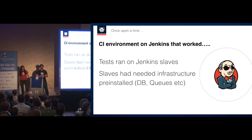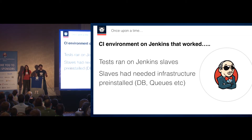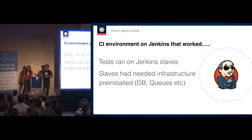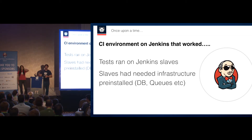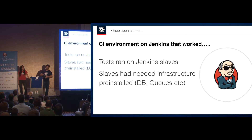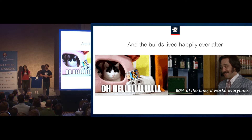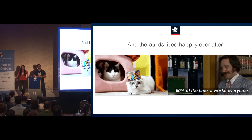Once upon a time, we had a CI environment based on Jenkins that kind of worked. We had tests running on Jenkins slaves. Each Jenkins slave was pre-installed with whatever infrastructure we needed to run the tests — that could be the runtime like JVM or Node.js, components like MongoDB for the database, RabbitMQ for the queue system, and so on. And everything worked perfectly.